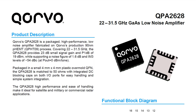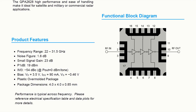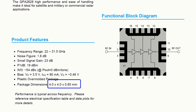In this video I will make a PCB layout of an LNA which is QPA2-6-2-8. Its frequency range is from 22 GHz to 31.5 GHz. This is the datasheet of this LNA. Gain of this low noise amplifier is 23 dB. Noise figure is 1.6 dB. Package dimensions are 4x4 mm. It has a QFN package.